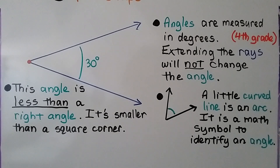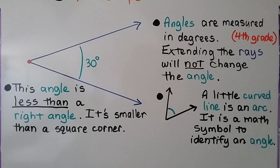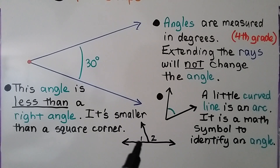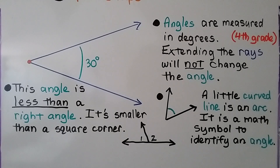Sometimes an angle will be identified with a letter of the alphabet, or a number like one, two, three, four. You'll see little numbers inside the angle — that would be angle one and angle two. You'll learn about that more as you get into the higher grades.